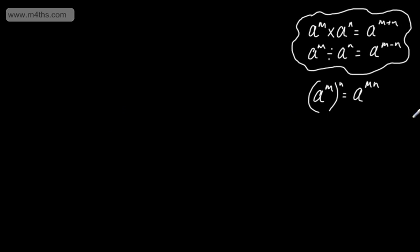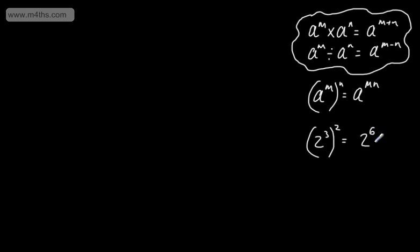Let's look at this in action. Say I have a base of 2 raised to the power of 3, then raised to the power of 2. I would have 2 to the power of 3 times 2, which gives me 2 to the power of 6. Thinking about 2 to the power of 3, that's 8. We would then square 8, and 8 squared gives us 64.